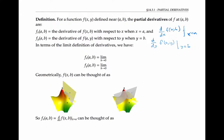In terms of the limit definitions of derivatives, we have f sub x of AB is the limit as h goes to zero of f of a plus h, b minus f of ab over h. That's because we're letting the x variable vary and holding the y variable constant at b.